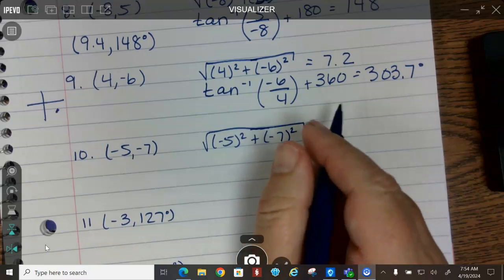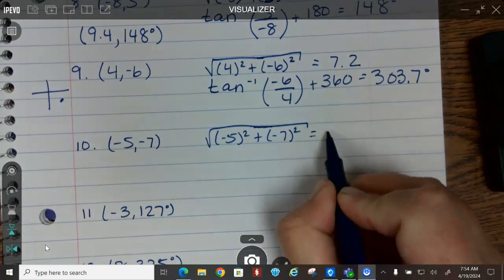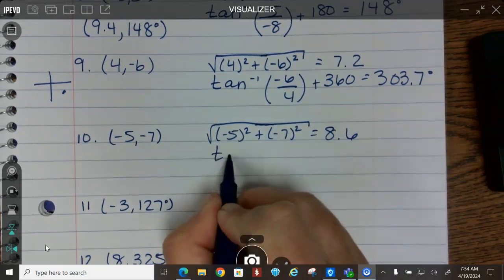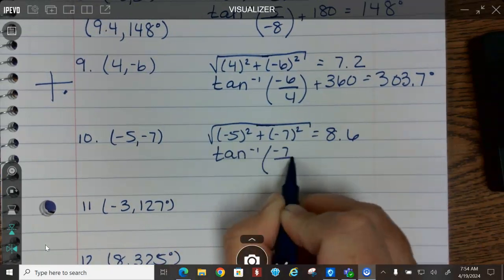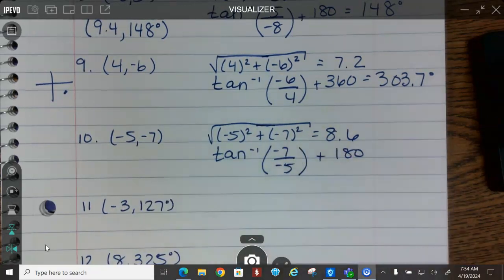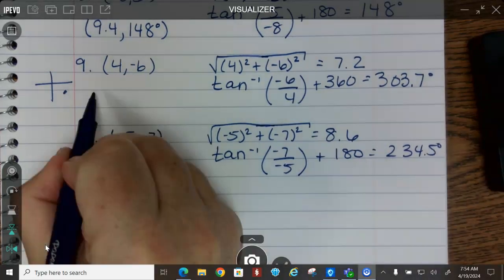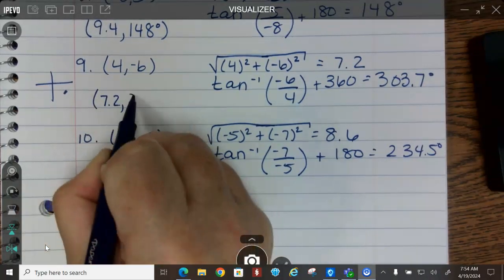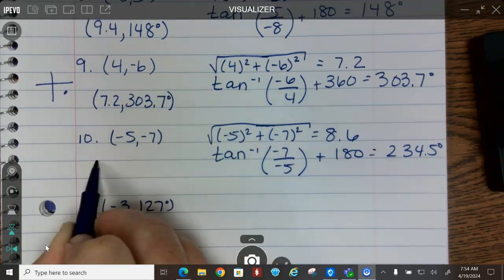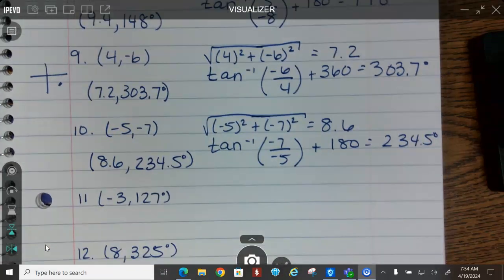And here's the last one. Square root of negative 5 squared, and again please make sure those parentheses around your negatives, because if you don't put parentheses around your negatives you will get an error sign. Parentheses are your friend. And then inverse tangent y over x. We're in quadrant three, so we're going to add 180, and I get 234.5 degrees. So 8.6 and 234.5.